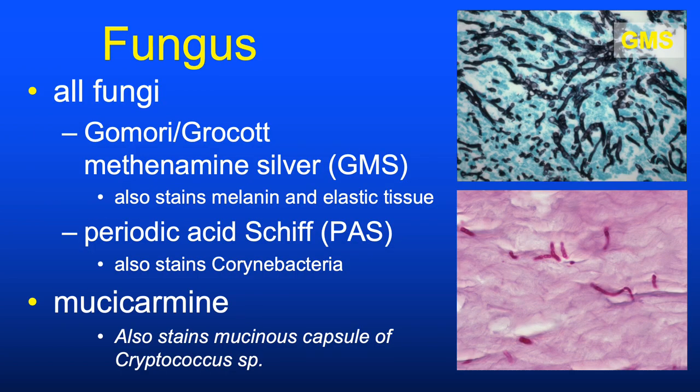The GMS stain is another silver-based stain and one of the top two fungal stains we use, along with PAS. In both cases, the stains target the polysaccharides in the wall of the fungus.